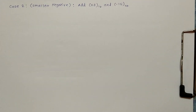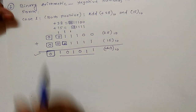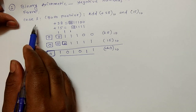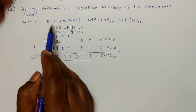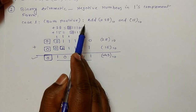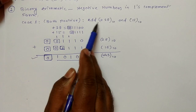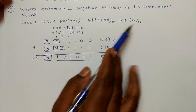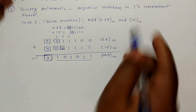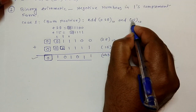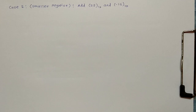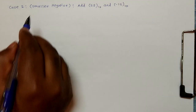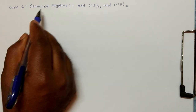Hello friends. In the last lecture we saw Case 1, where both numbers were positive — plus twenty and plus fifteen were positive. Now in Case 2, what we have to see is that the smaller number is negative.